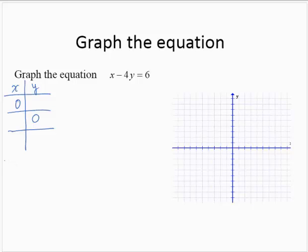Substituting 0 for x, I would have 0 minus 4y equals 6. So that's negative 4y equals 6. And dividing through by negative 4, y would equal, reducing the fraction, negative 3 halves. Now negative 3 halves is a little trickier to work with. It's a fraction, that's OK. Negative 3 halves is the same as negative 1 and 1 half.